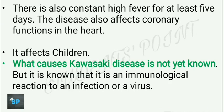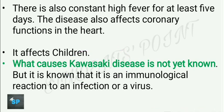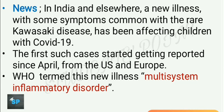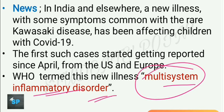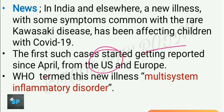There is also constant high fever for at least 5 days, and the disease affects coronary functions in the heart. It often affects children, and there is no known cause, though it is well established as an immunological reaction to an infection or virus. Kawasaki disease was in the news because a new kind of illness with symptoms similar to it has been affecting children suffering with COVID-19, with first cases reported from April in the US and Europe. WHO has termed this new illness multi-system inflammatory disorder.